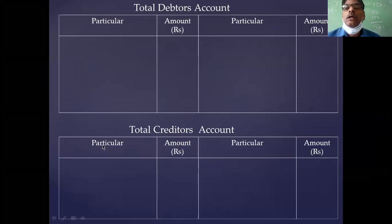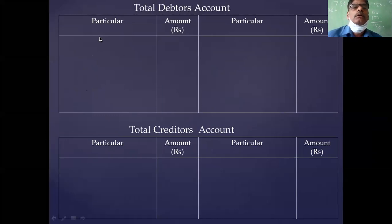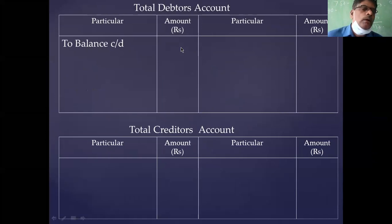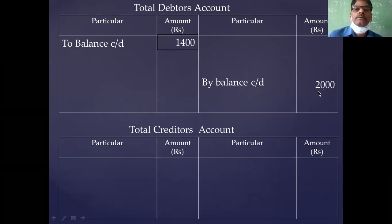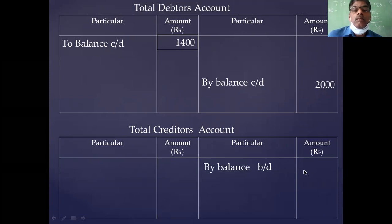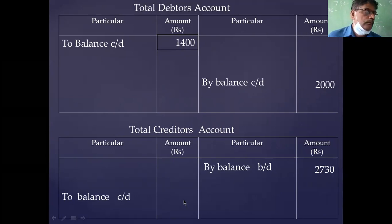In the debtors account, first enter the opening and closing balances. Balance brought down — opening balance is 1,400. Balance carried down — closing balance is 2,000. For the creditors account: balance brought down is 2,730; balance carried down — closing balance is 3,000. I have recorded the opening and closing balances of both accounts.